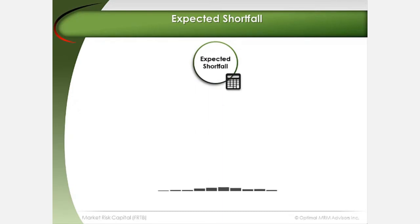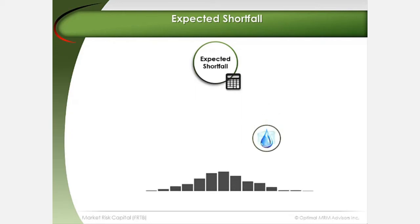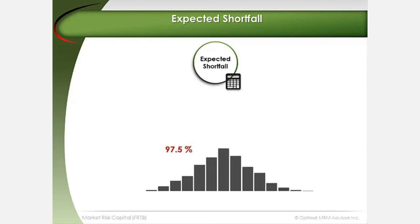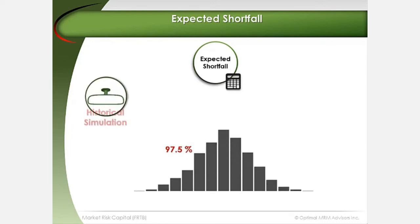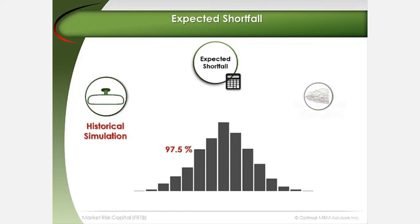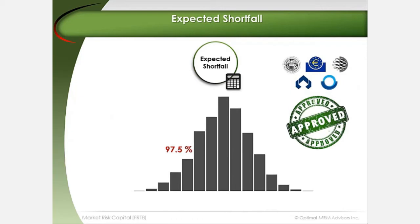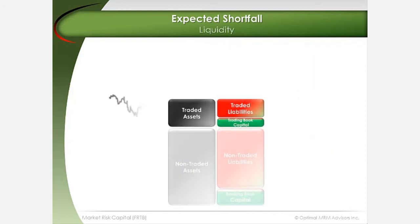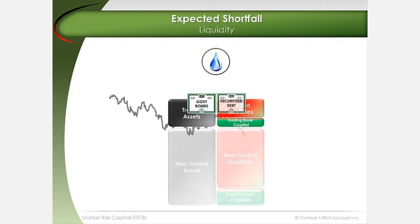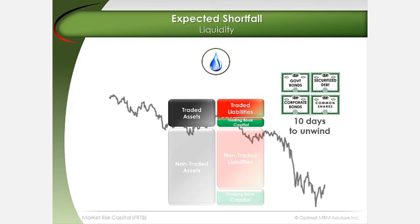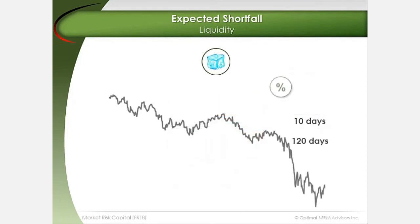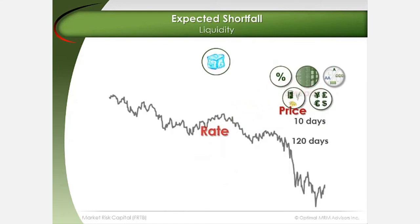The introduction of expected shortfall is a fundamental shift away from a value-at-risk based approach to a measure of trading book loss that reflects the risk of markets becoming illiquid under stress. It is calculated as an expected loss at 97.5% confidence. Banks can use historical simulation, Monte Carlo simulation, and other models. Banks must be approved by local regulators to use expected shortfall to set minimum capital for market risk. Expected shortfall replaces the static 10-day horizon for all risk factors with horizons of up to 120 days, based on risk class and risk factor within each class.